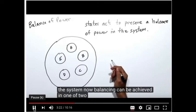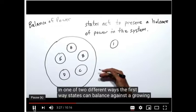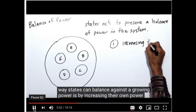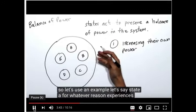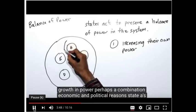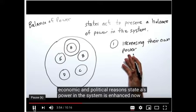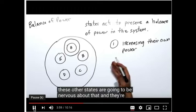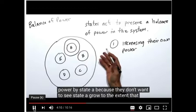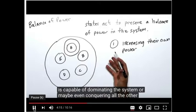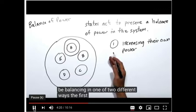Balancing can be achieved in one of two different ways. The first way states can balance against a growing power is by increasing their own power. For example, if state A experiences a growth in power due to a combination of economic and political reasons, the other states will be nervous and will take measures to balance against this growth — because they don't want state A to grow to the extent that it could dominate the system or conquer all other states.